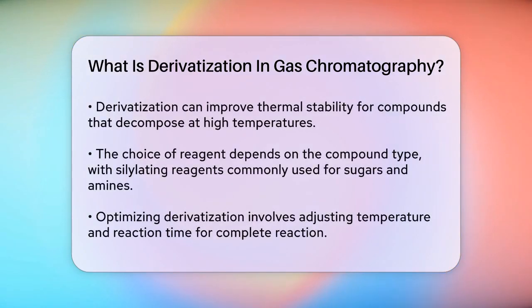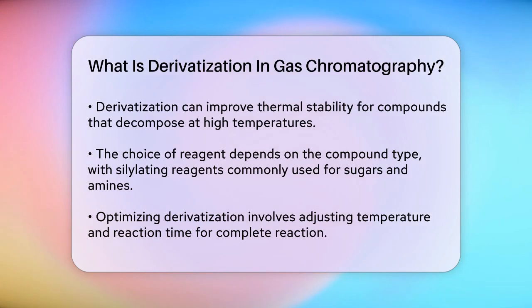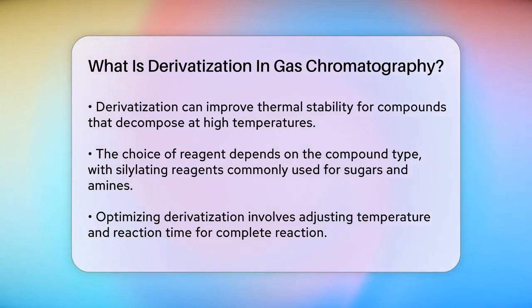Derivatization can also be used to increase the thermal stability of the analyte. For example, compounds that are prone to decomposition at high temperatures can be derivatized to make them more stable during the GC analysis.